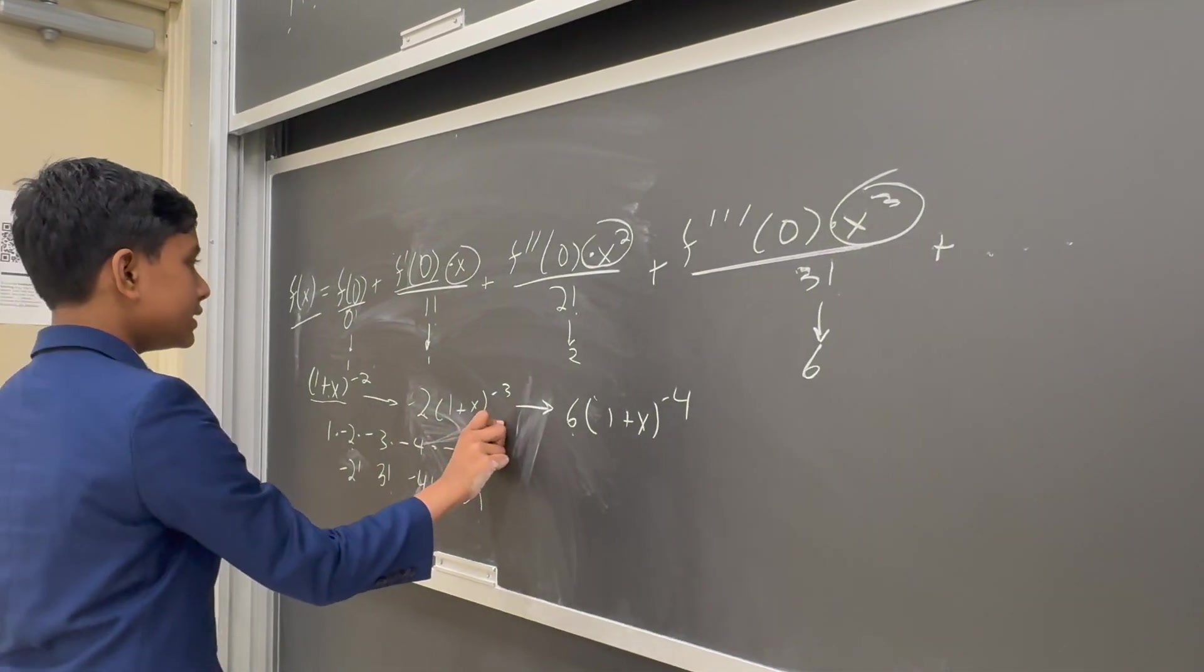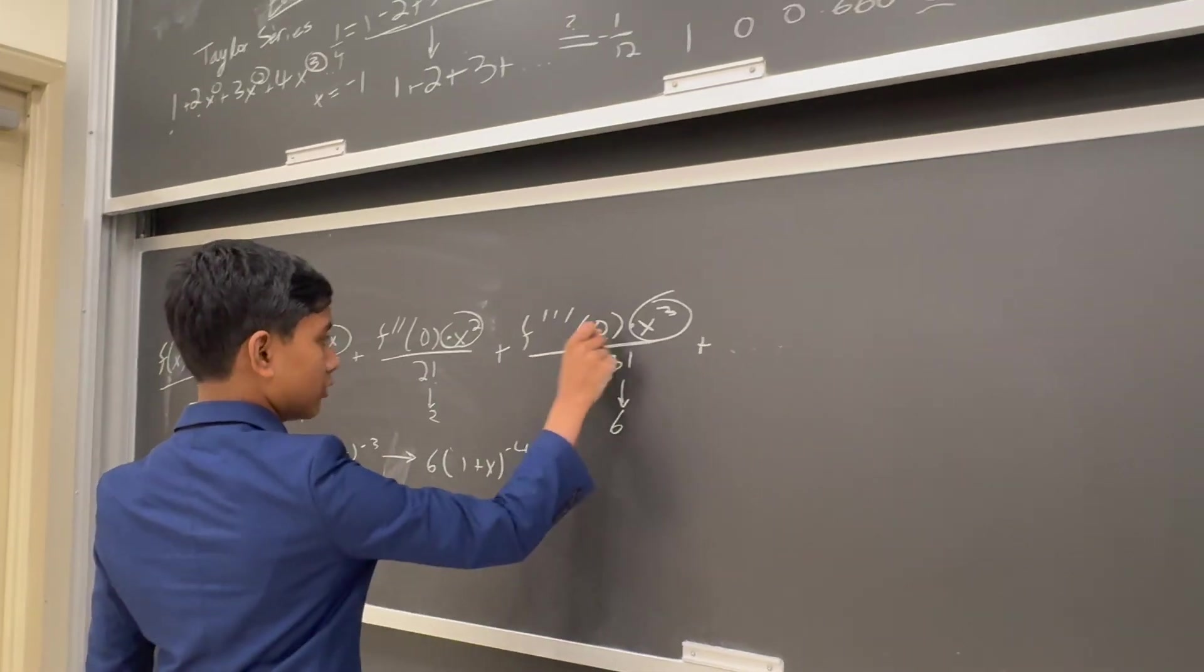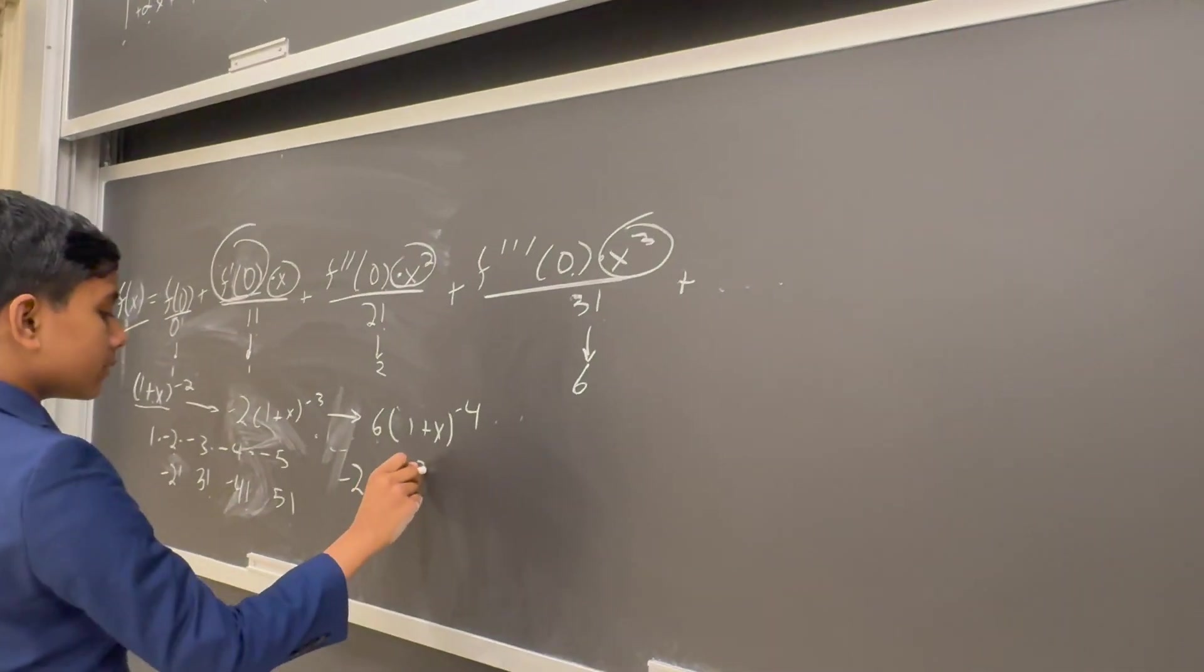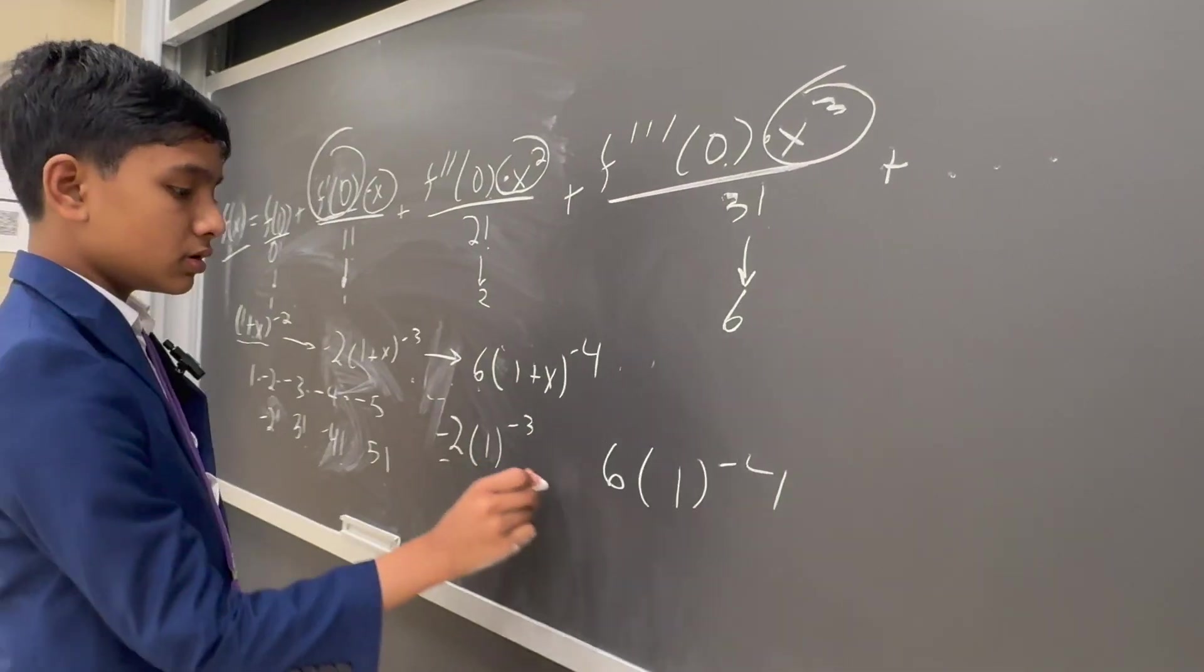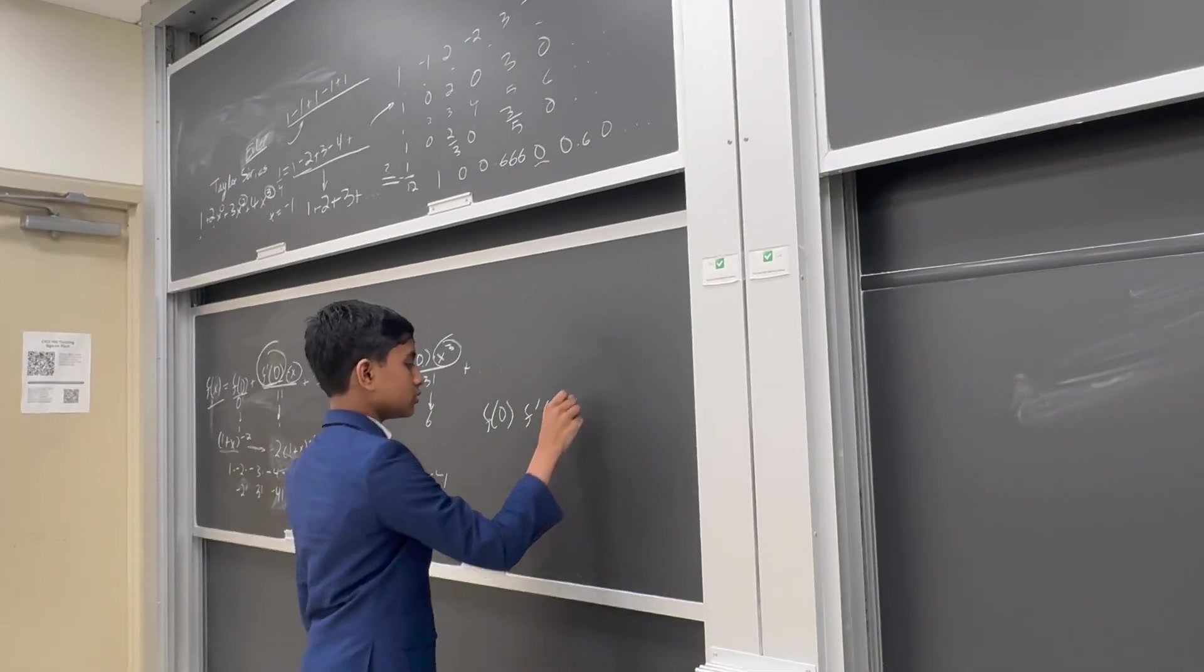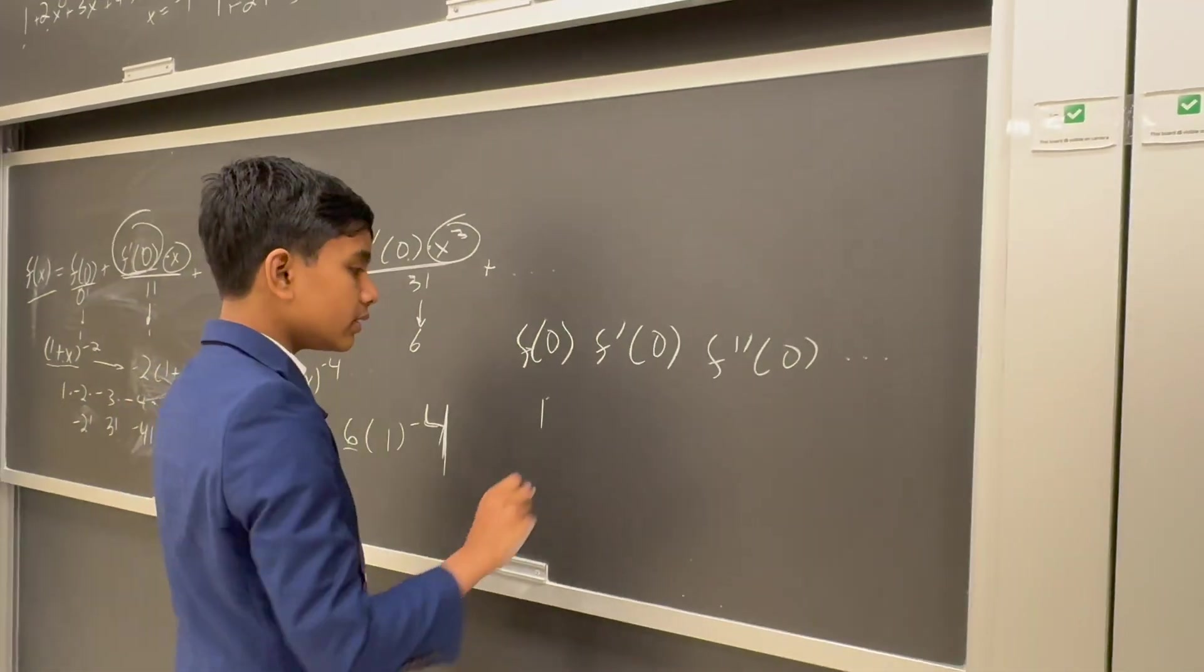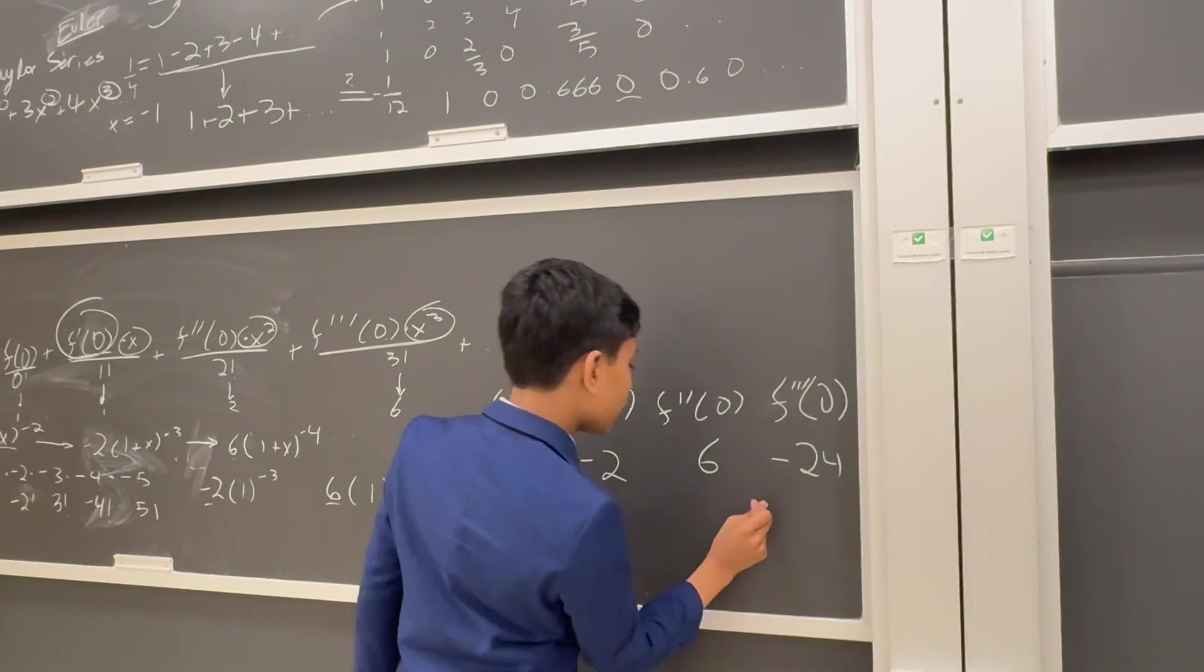Now, how is this useful? Well, for exactly one reason. What happens when we plug in minus 1? So, well, no, what happens when we plug in 0? Minus 1 would make these all undefined. So once we plug in 0, like seen here, we just get minus 2 times 1 to the minus 3, 6 times 1 to the minus 4. So Euler was really just searching for a function such that its derivatives at 0 had the values of the factorials.